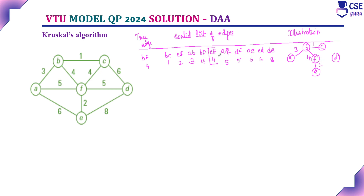Next, consider edge CF with weight 4. If you include this edge, it forms a cycle, so we should exclude it. Then consider edge AF with weight 5 — including this edge also forms a cycle, so we exclude it as well.